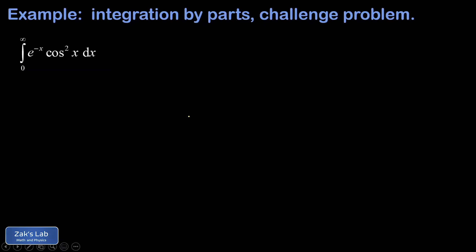In this video, we're looking at an unusually difficult integration by parts problem. There are two things that make the problem unusual. The first is that our limits of integration are from zero to infinity, meaning this is an improper integral. But that's not really much of a complication, as long as we can sub in the infinity and obtain an unambiguous result. It turns out that's possible in every case, so we don't have to formalize the limiting process. The part that makes it really hard is that I have a cosine squared attached to this exponential function.